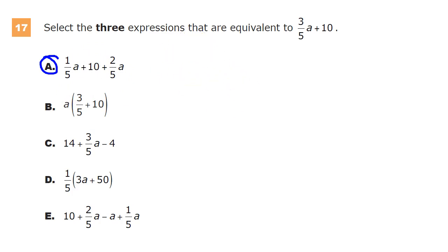For B, the thing about this one is it's very tempting to choose it because when you do your first distribution, you'll end up with three-fifths times a, right? And then you're like, oh, there it's totally because it's got plus 10. Nope. The a also has to be distributed to the 10, 10a or 10a. Nope. Not the same thing. B is out.